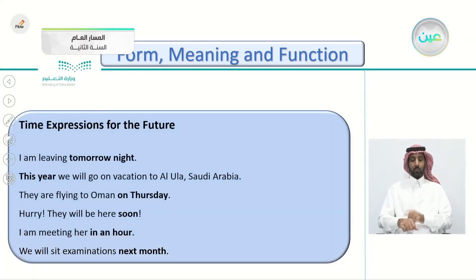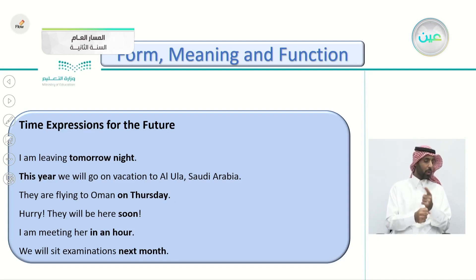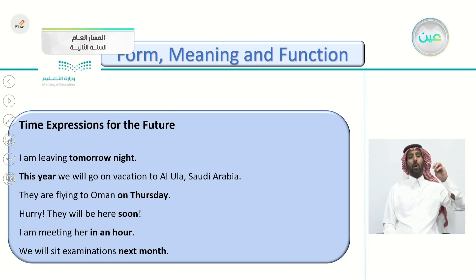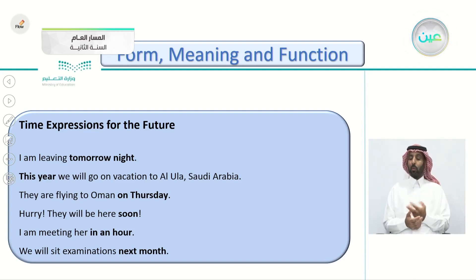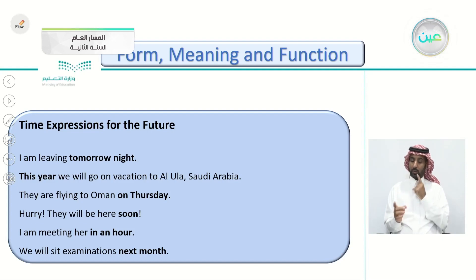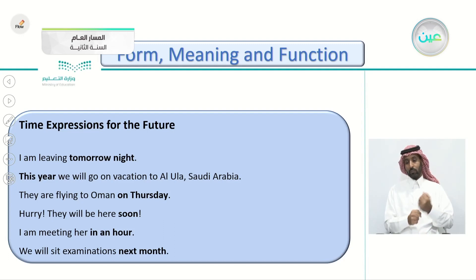Time expressions for the future are words in the sentence that tell you when the action is happening. Examples: 'I am leaving tomorrow night' — 'tomorrow night' is the time expression. 'This year, we will go on a vacation to Al-Ula, Saudi Arabia.' 'They are flying to Oman on Thursday' — 'on Thursday' is the time expression. 'We will sit examinations next month' — 'next month' tells you when.